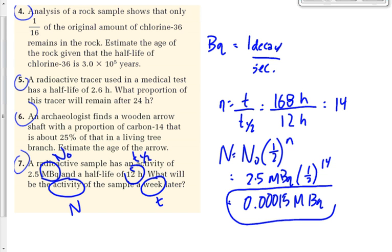A tip on units: if you don't recognize the unit in a problem, it's either N or N₀. The only other units in these problems are for time — half-life or elapsed time — which you'll recognize as seconds, hours, days, or years. If you see a unit you don't recognize at all, it represents big N or big N₀.